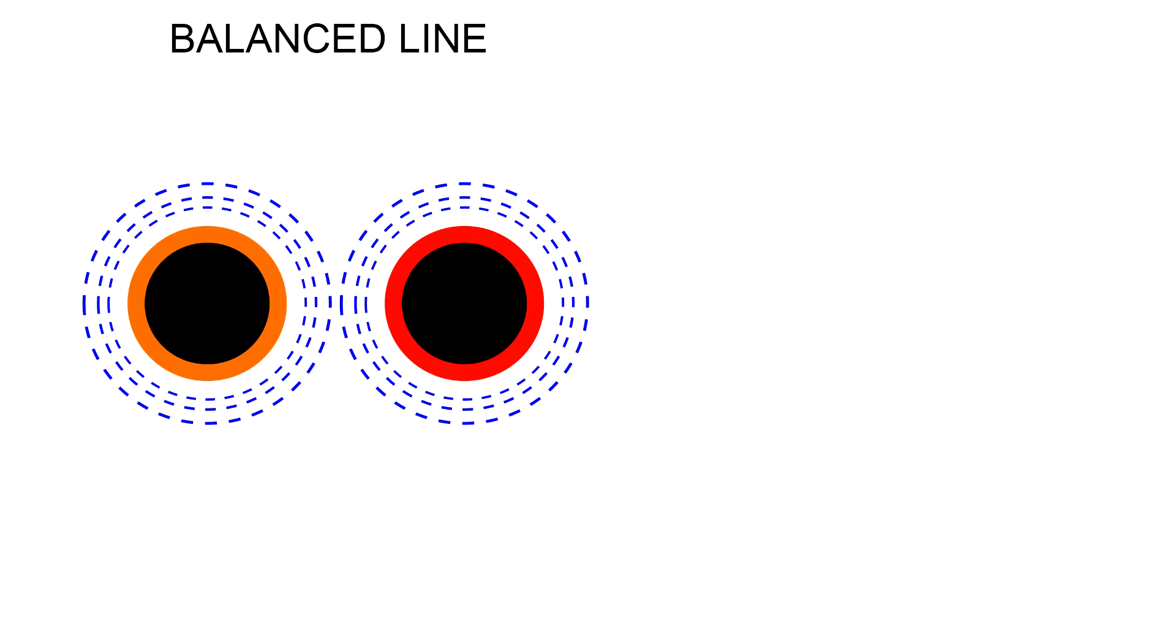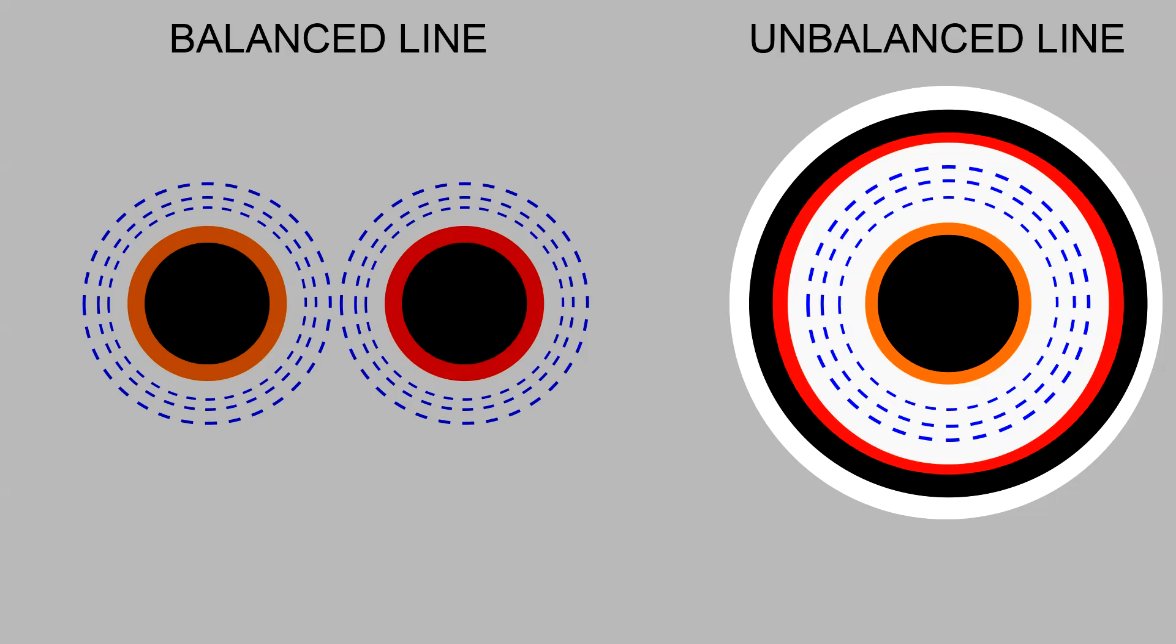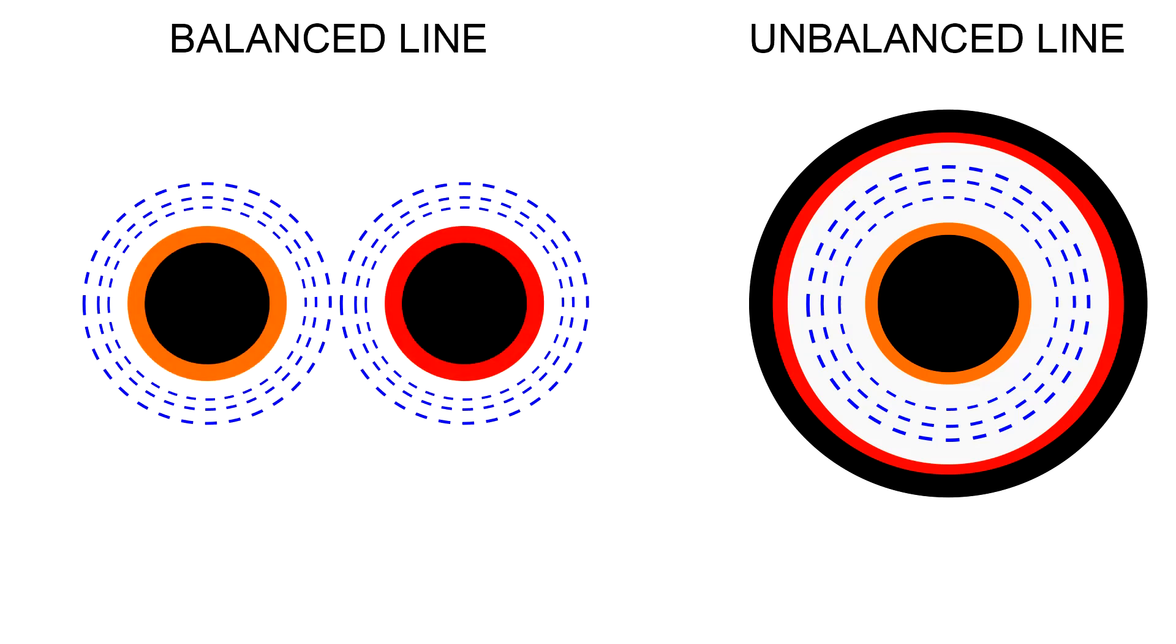This is how the skin effect develops on a parallel wires transmission line. We can also see the shape of the generated fields. This is how the skin effect develops on a coaxial line. Due to the addition of the proximity effect, the current is distributed on the inside of the shield and on the outside of the center conductor.